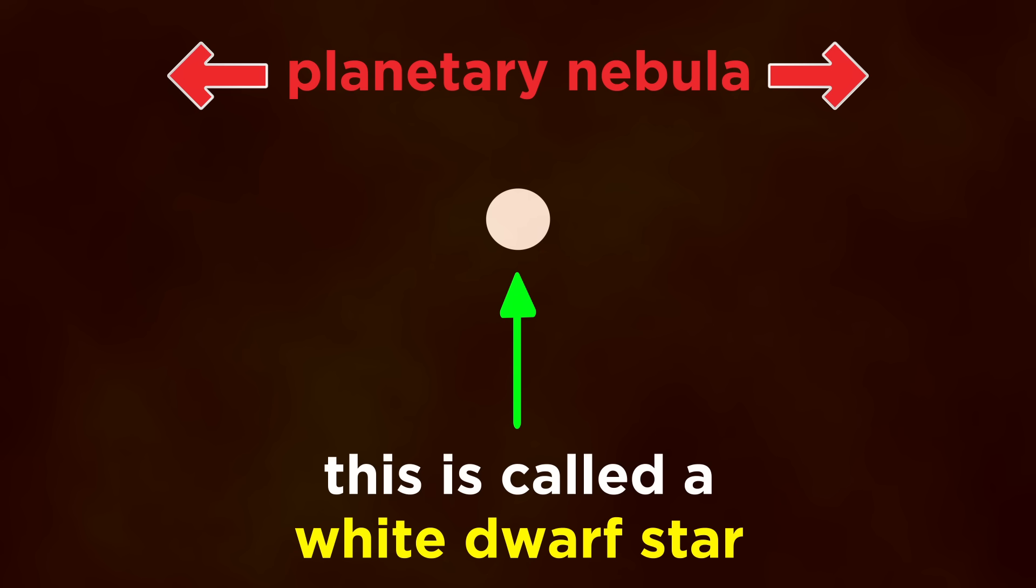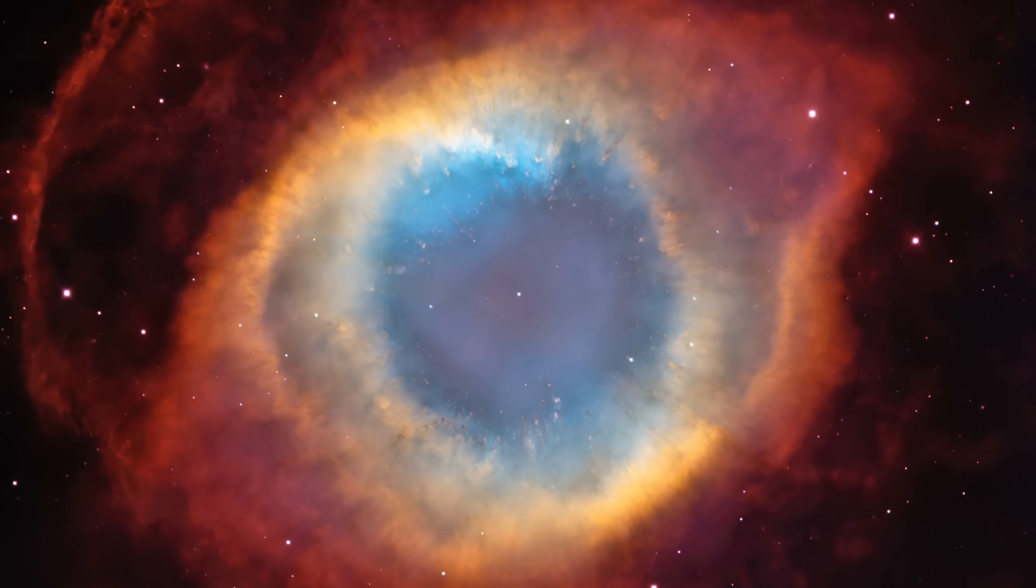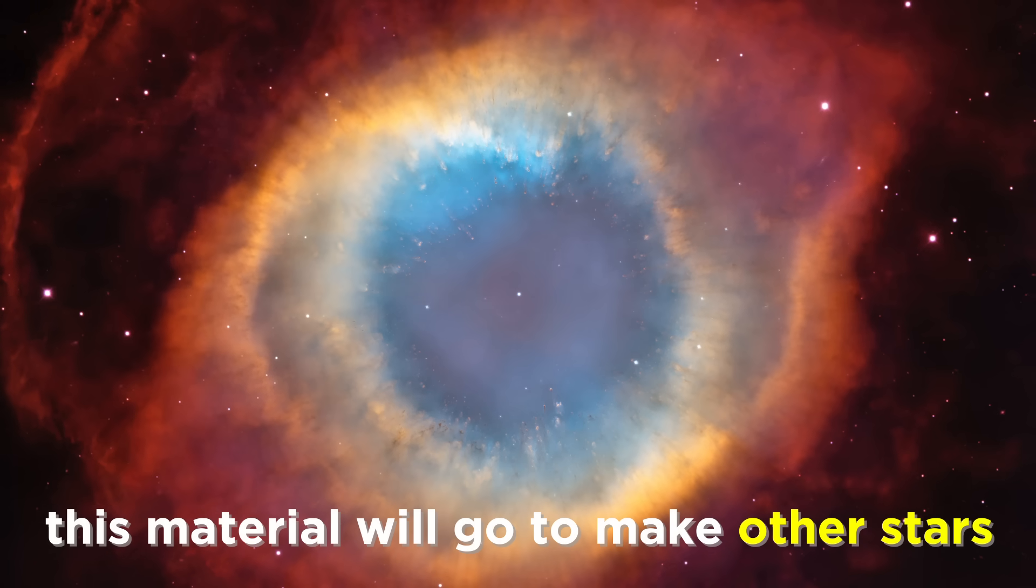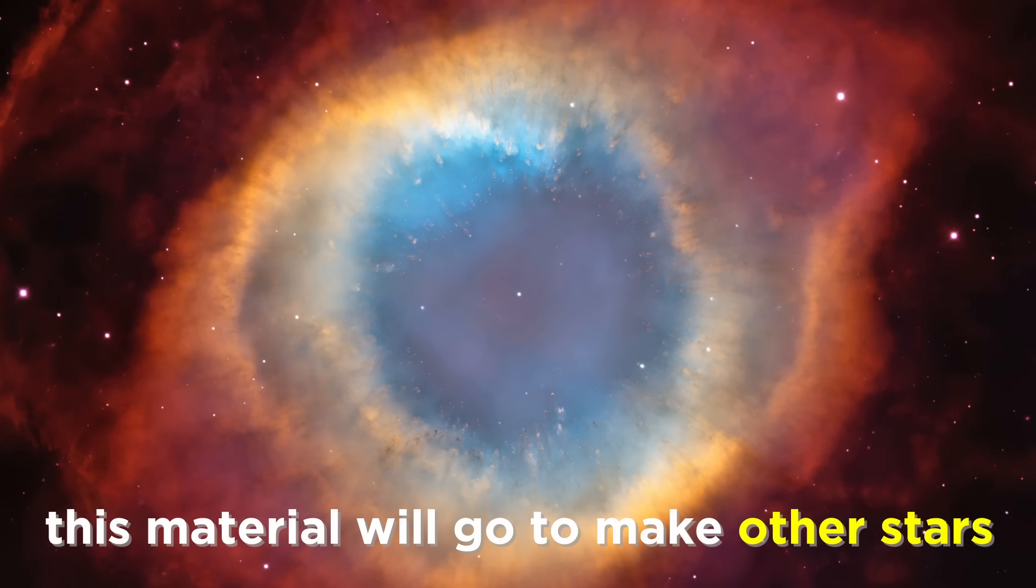The ejected shell is called a planetary nebula, which is misleading, since it is not a planet, and did not come from a planet, but the name originated from confusion upon its discovery, and it stuck. The material in a planetary nebula will then become available to join more gas particles to form yet another star.